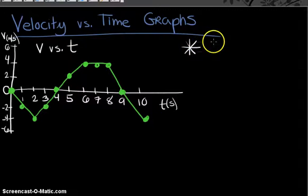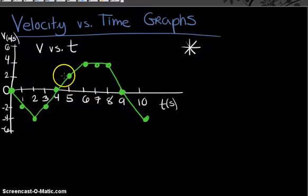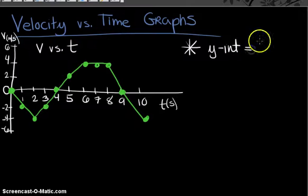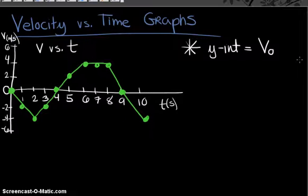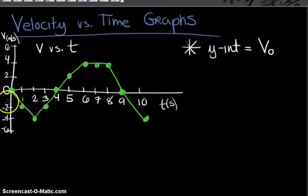One of the first things that came up is that the y-intercept of a V versus T graph is equal to the initial velocity of the object. Keep in mind that this is not always zero — for the example given today it happens to be, but in class we saw initial velocities of positive four meters per second, for example.